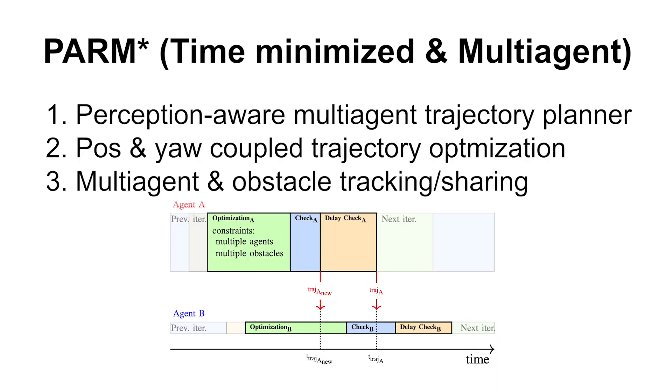Additionally, using robust MADER's communication delay robust trajectory-sharing strategy, PARMSTAR achieves safe trajectory deconfliction among agents. Primer also shares the obstacles it is tracking with other agents.